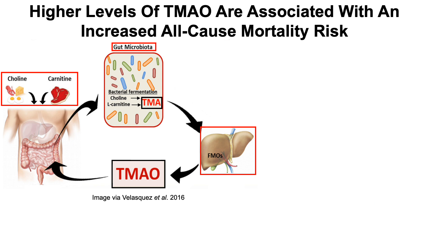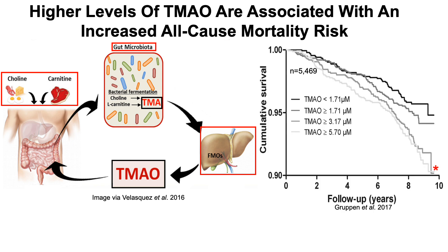Let's have a look at that data. We're looking at cumulative survival on the y-axis plotted against time. Compared to the lowest TMAO quartile — people who had the lowest level of TMAO in their blood — the two highest levels of TMAO were associated with a 71% and an 86% increased all-cause mortality risk for Q3 and Q4, the third and fourth quartiles of plasma levels of TMAO.